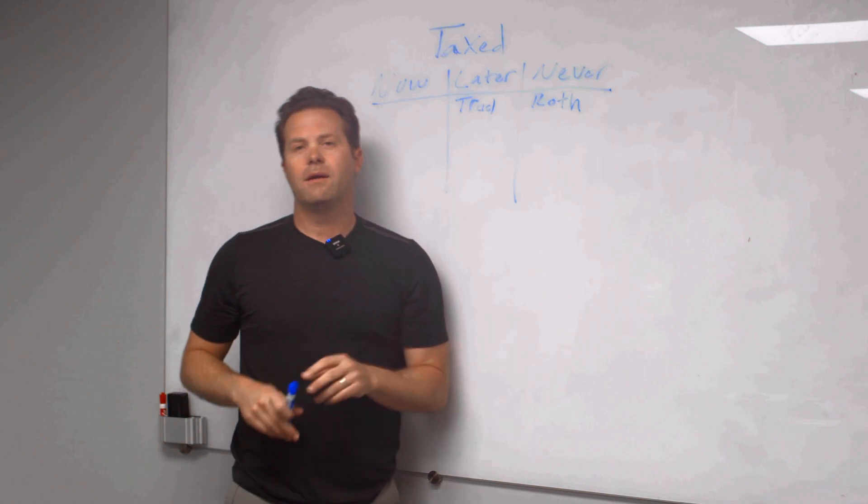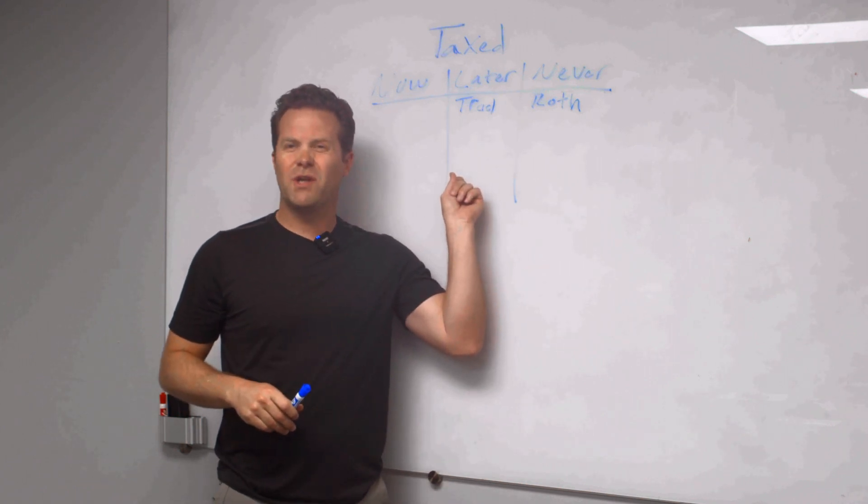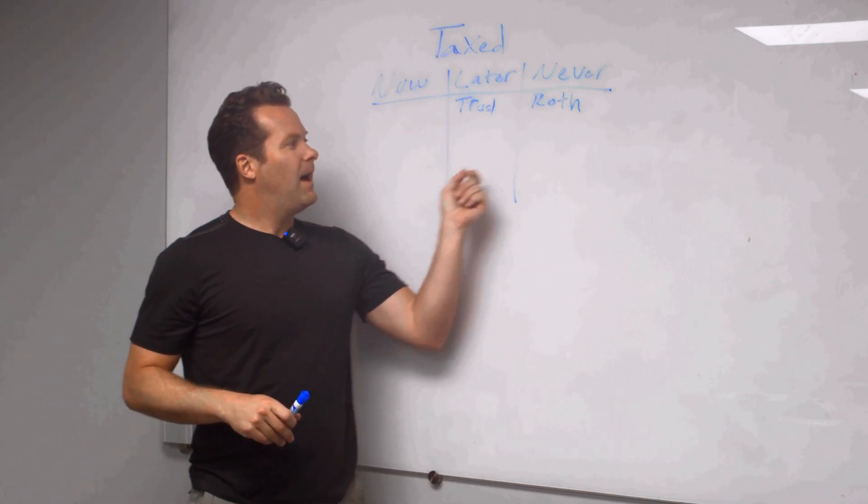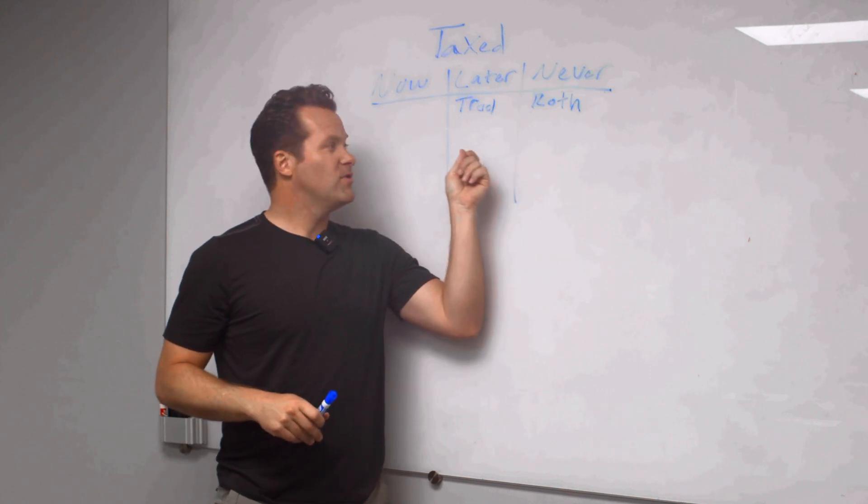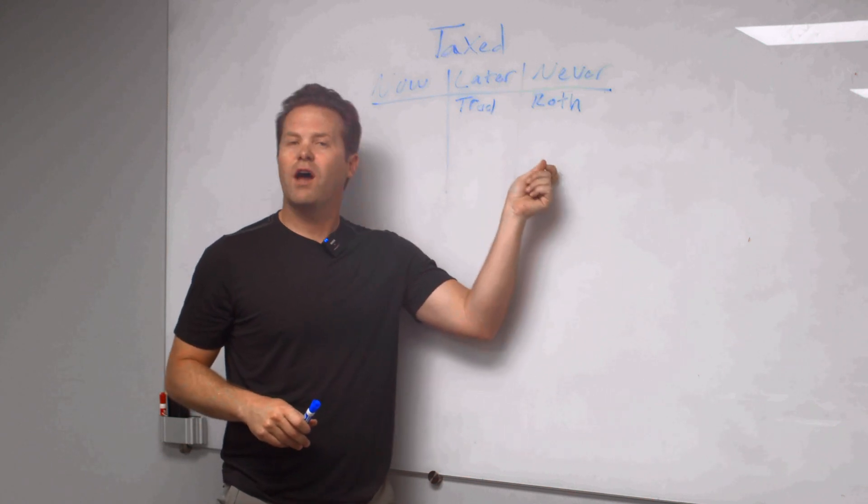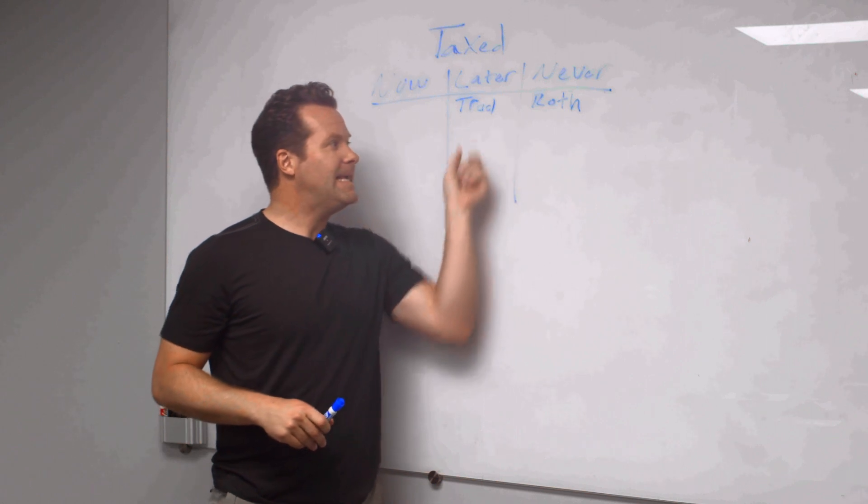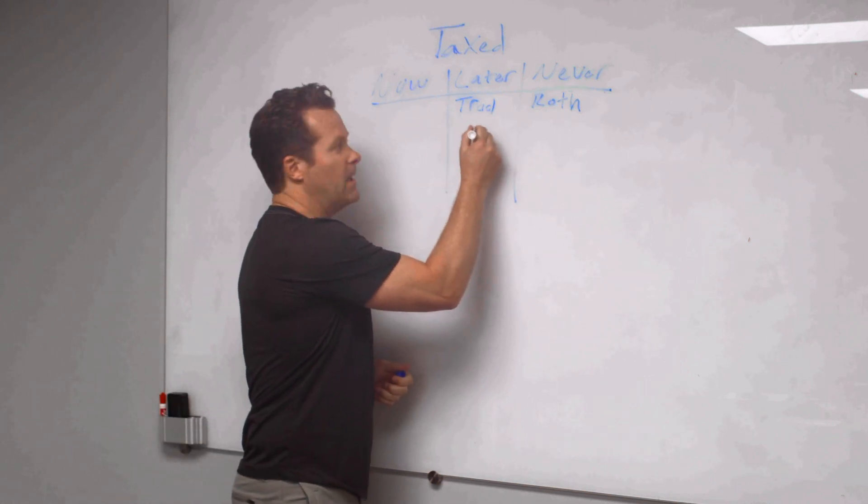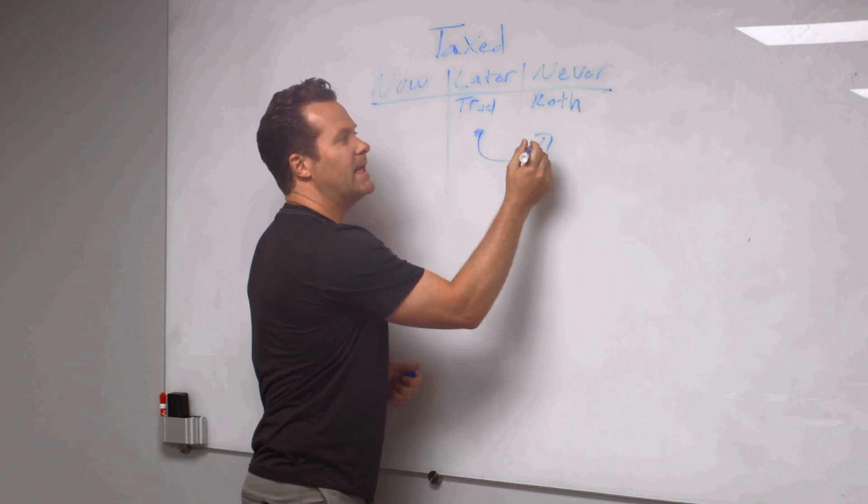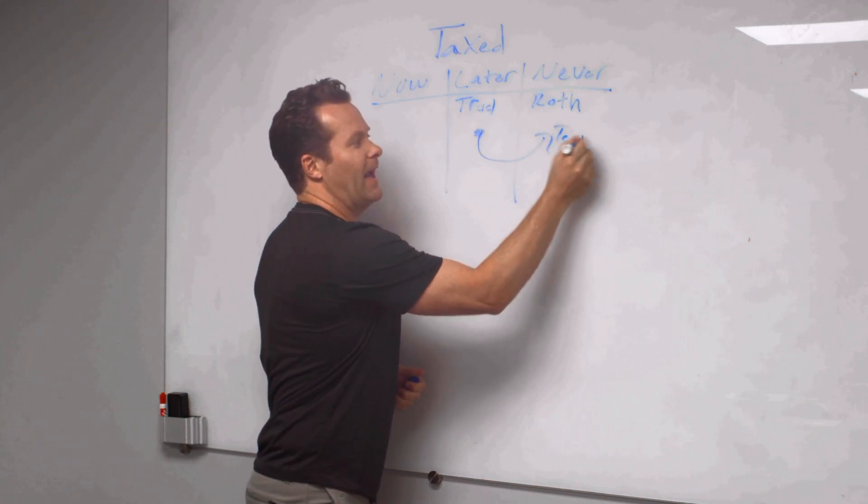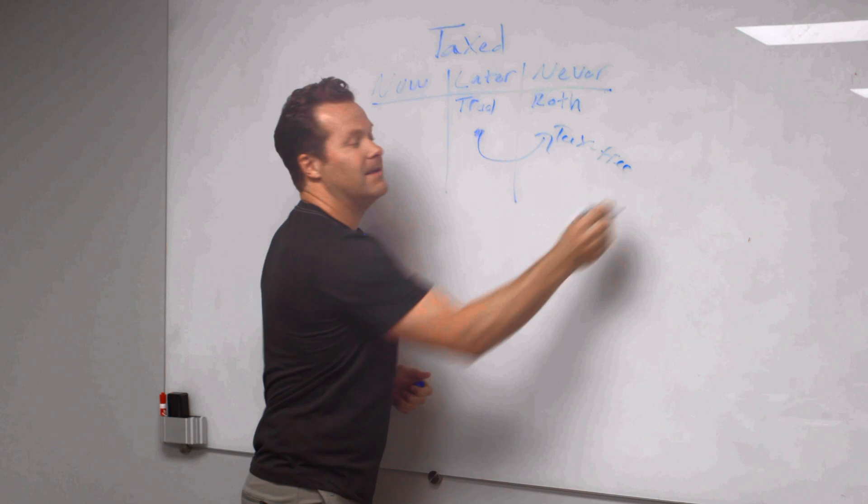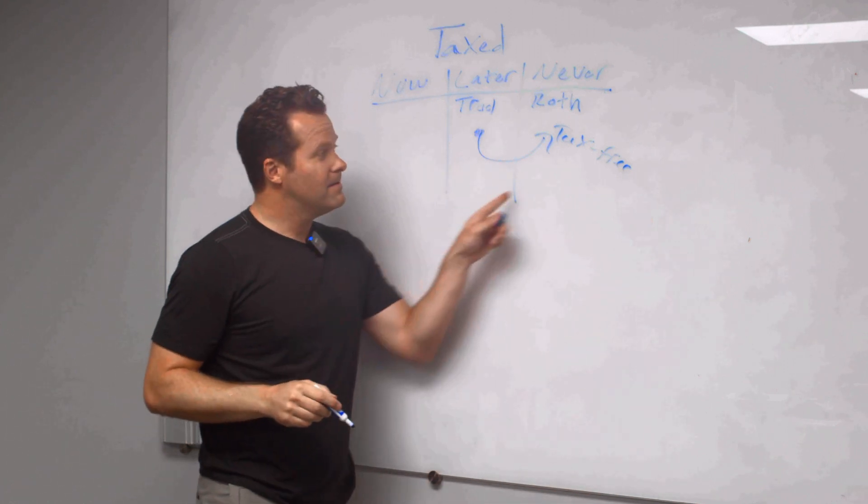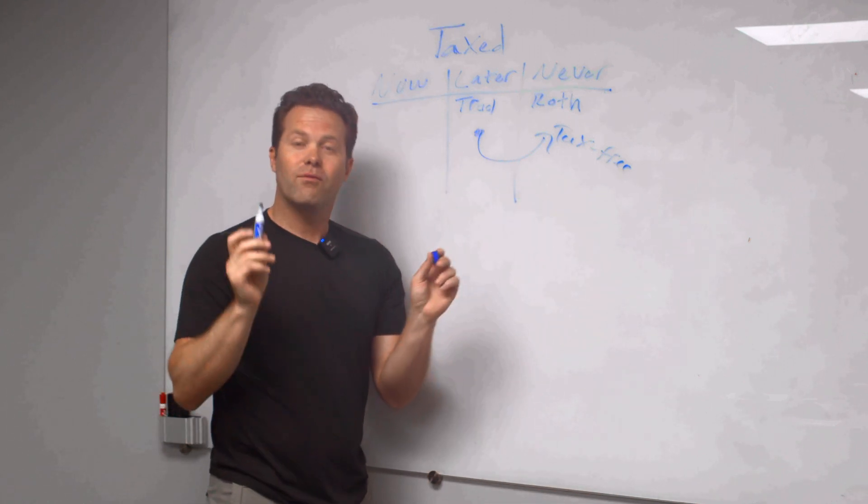If you're like, Matt, I've got a bunch of money in a traditional IRA, I'd rather be over on the Roth IRA side, or maybe it's even traditional 401k, I want to get to Roth 401k. Can I get over there? Can I get out of here with my retirement account dollars and get over to here into tax-free land? Yes. There's a ticket to tax-free land. It's called the Roth conversion.